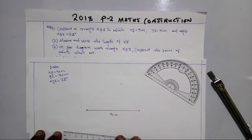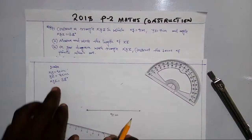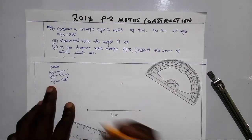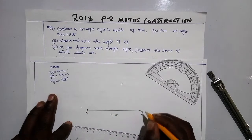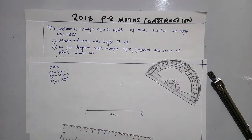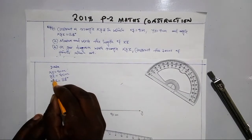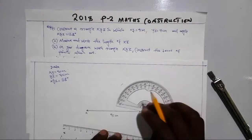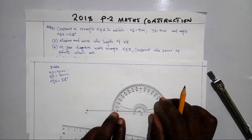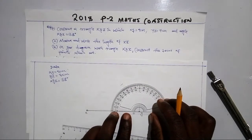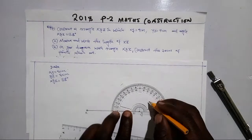Now to find the other side, we have to measure the angle which we have been given. This is our point X and point Y. We are looking for angle Y, so we stand at Y with the protractor and measure 80 degrees.